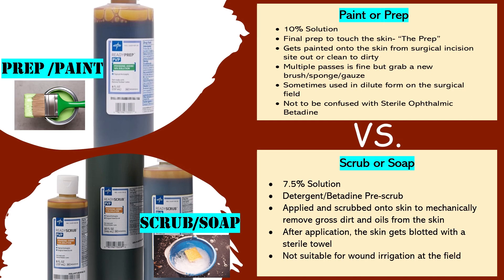Now let's talk about betadine scrub or betadine soap. Betadine scrub is a 7.5% solution — it's actually a mix of soap and betadine, like a detergent and betadine. Using betadine scrub is optional, but I would recommend it for closed, intact skin free of mucosal membranes. The goal is to scrub the skin to mechanically remove oils and dirt. After scrubbing, blot it dry with a sterile towel to remove as much of the scrub as possible, then follow with the betadine paint.